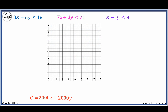We plot the lines by finding the x and y intercepts. In the first equation, the x-intercept is 18 divided by 3 equals 6, and the y-intercept is 18 divided by 6 equals 3. Next, we have 21 divided by 7 equals 3, and 21 divided by 3 equals 7. Finally, 4 divided by 1 equals 4 for both intercepts. Since all equations are less than or equal to, we shade the feasible region below all three lines.